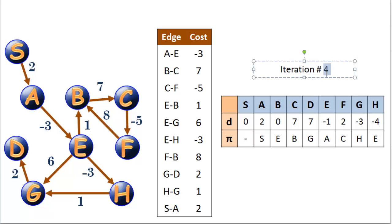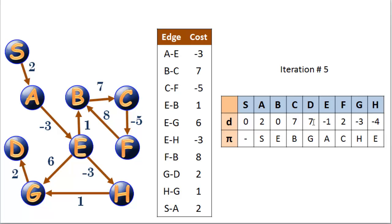Let's do iteration 5. A to E is not going to change anything — we've already found our best route to E. B to C with a cost of 7 and C to F with a cost of negative 5 are already factored in: 7 minus 5 is 2. All outbound edges from E are already factored in. F to B with a cost of 8 — F is 2, add 8, we can't get a cheaper route to B. G to D with a cost of 2 — it costs us negative 3 to get to G, so we can get to D for negative 1. That's a faster route than the previous 7.